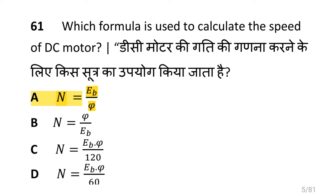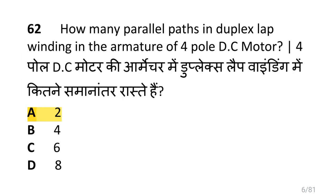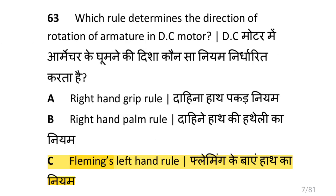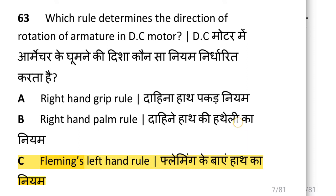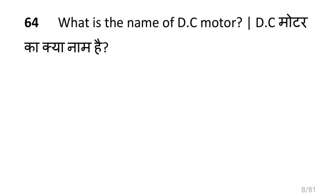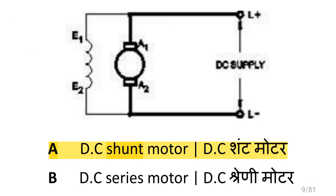Here, Eb is back EMF. How many parallel paths are in duplex lap winding in the armature of a four pole DC motor? Which rule determines the direction of rotation of armature in DC motor? That is Fleming's left hand rule. What is the name of DC motor? That is DC shunt motor.